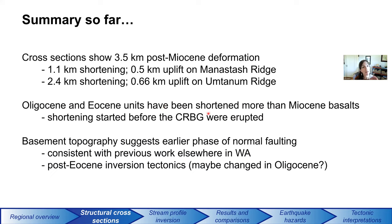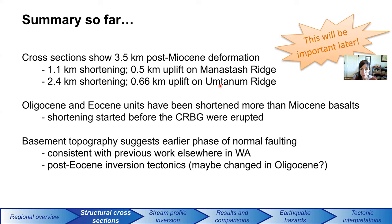To quickly summarize: the cross sections show about 3.5 kilometers of shortening across the region. On individual structures, we estimate about 0.5 kilometers of uplift since mid-Miocene time along the Manashtash Ridge and about 0.66 kilometers on the Umtanum Ridge. From the Eocene and Oligocene units, we also saw that those may have experienced a bit more shortening prior to the Miocene basalt eruption, so shortening started sometime before the CRB erupted. From the basement topography, we suggest there was an earlier phase of normal faulting that was later inverted to compressional or transpressional sometime in the Oligocene.